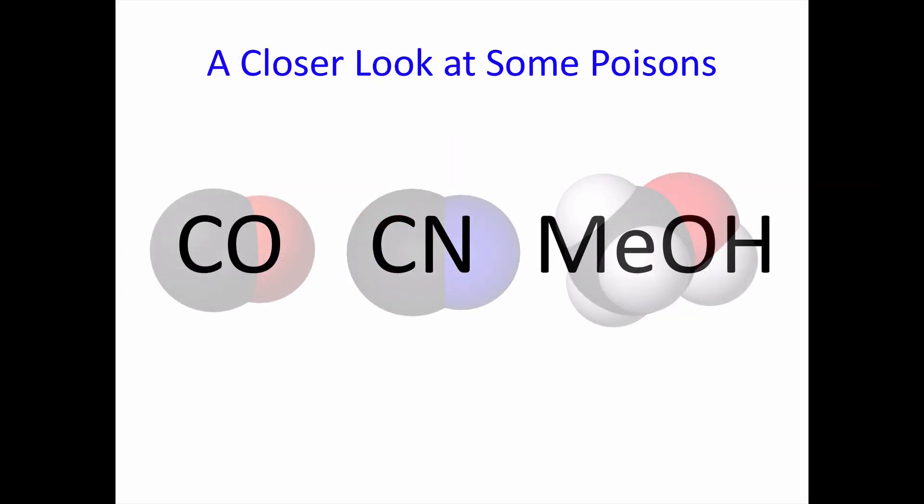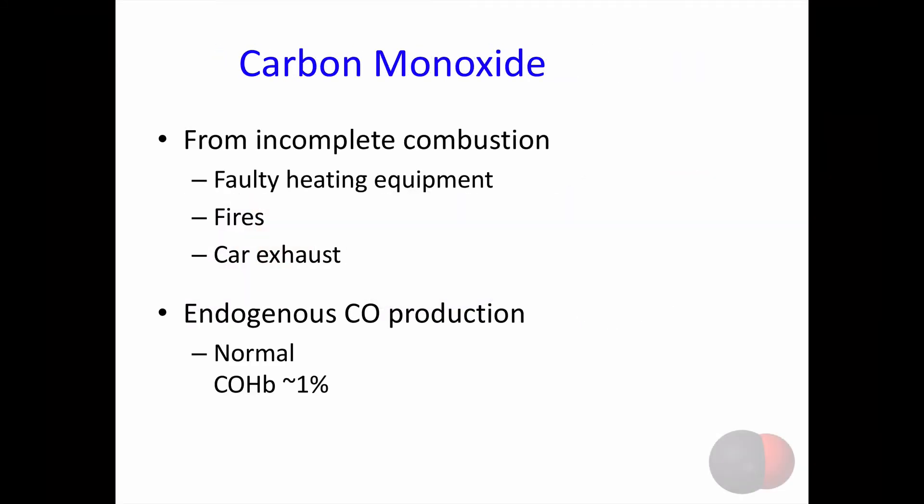Now we're going to take a closer look at carbon monoxide, cyanide, and methanol. Carbon monoxide is a product of incomplete combustion — usually when carbonaceous fuels are burned we get CO2, but some amount will only be oxidized to CO. Carbon monoxide poisoning can occur from faulty heating equipment, any kind of fire, and car exhaust, although this is less common now that nearly all cars use catalytic converters. In addition, there are endogenous sources of carbon monoxide, such that we normally have carboxyhemoglobin levels around 1% — about 1% of your hemoglobin is normally bound to CO, but it's such a small amount that it doesn't cause any problems.